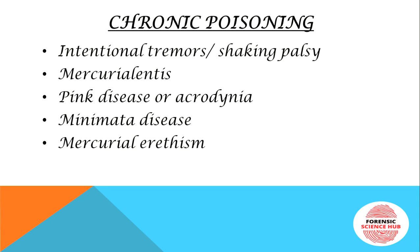Next is pink disease or acrodynia, seen mostly in children due to an idiosyncratic hypersensitivity reaction to inorganic mercury. Symptoms include pinkish rashes on the palms, soles, or extremities of children. Minamata disease is a well-known disease that spread in Japan in Minamata Bay. A factory discharged inorganic mercury into the water, which was methylated by bacteria and subsequently ingested by fish. These fish were then eaten by local villagers, leading to the spread of chronic mercury poisoning. Symptoms include disturbances in hand coordination, gait and speech, chewing and swallowing disturbances, visual problems, and tremors.